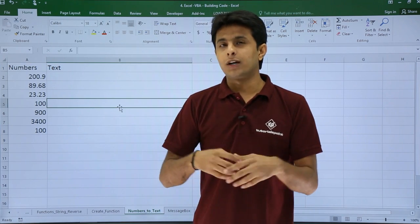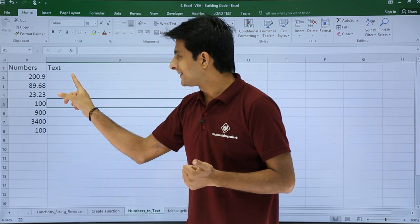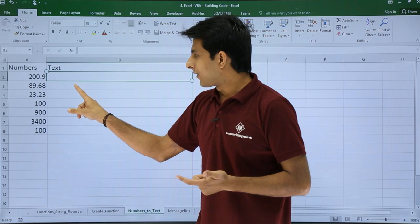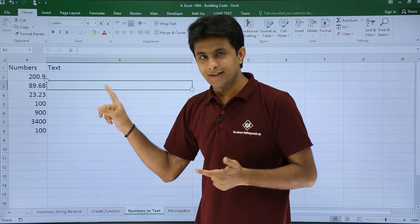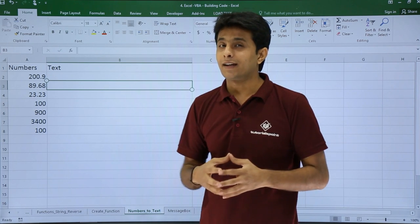If I want to convert these numbers into text, for example $200.90, $89.68, $23.23, how do I do it?